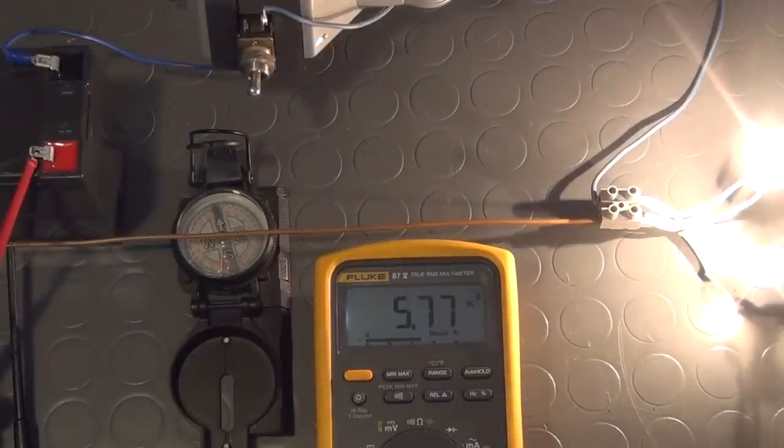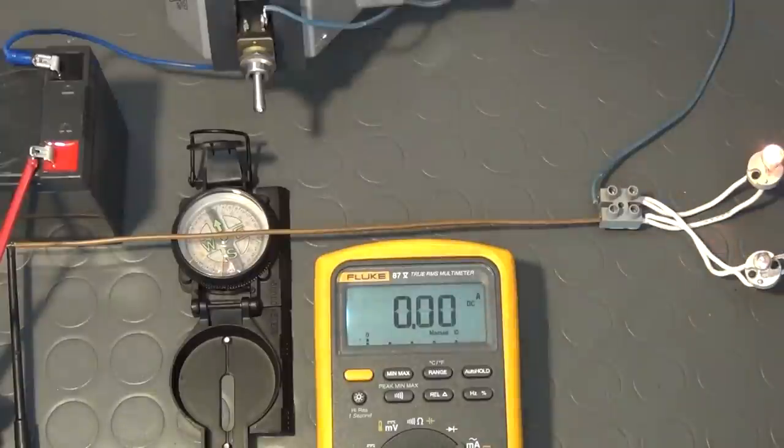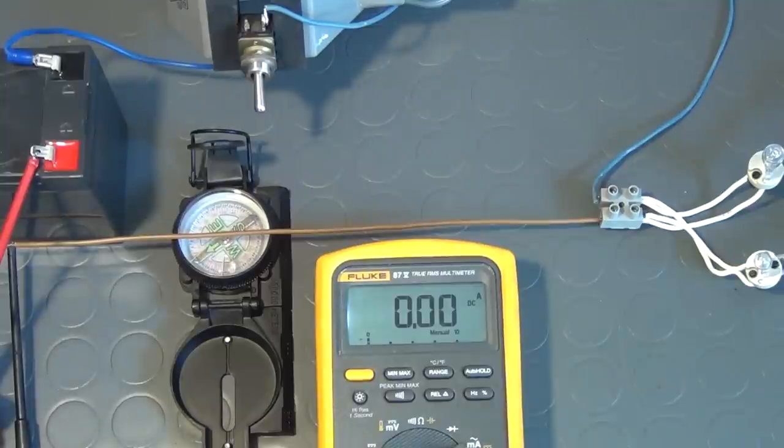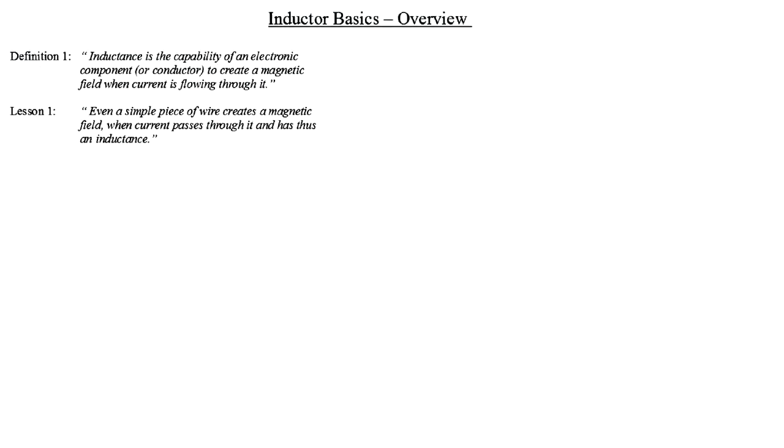As you can see, a current of around 5.8A has started flowing through the circuit. The compass needle has moved quite a bit, with the north pole of the needle pointing away from us, clearly indicating that a measurable magnetic field was created around the copper wire. And as I open the switch, that magnetic field vanishes again. I call this our lesson one. Even a simple piece of wire creates a magnetic field when current passes through it and has thus an inductance.